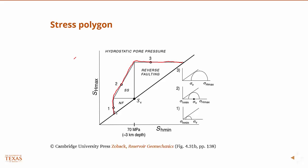These bounds are essentially those inequalities that were on the previous page combined with Andersonian fault classification. If you know the faulting regime is reverse faulting, you're always going to be here.